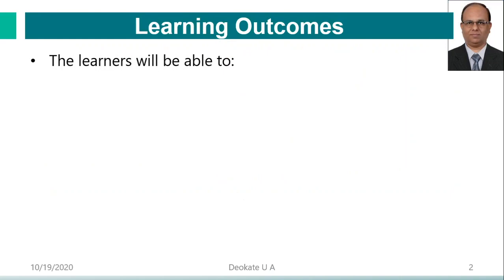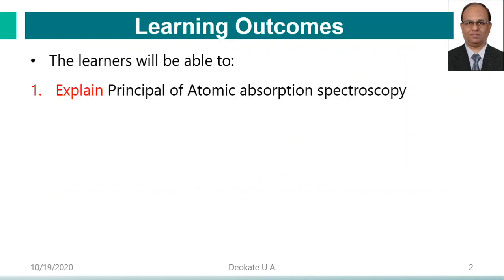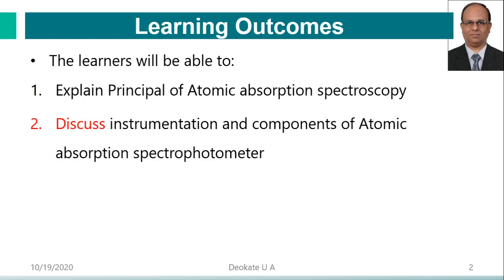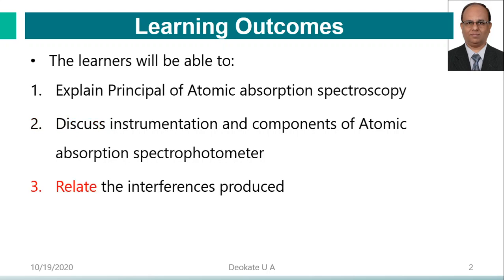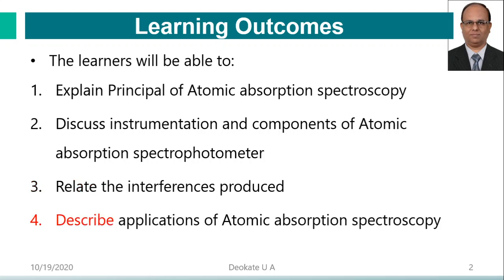The learning outcomes: the learner will be able to explain the principle of Atomic Absorption Spectroscopy, discuss the instrumentation and components of the Atomic Absorption Spectrophotometer, relate the interference produced in atomic absorption, and describe applications of atomic absorption spectroscopy.